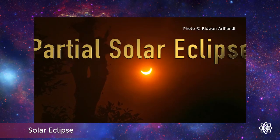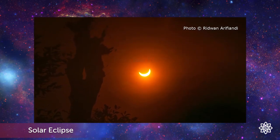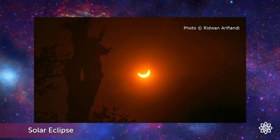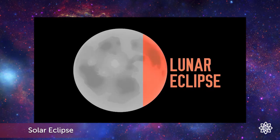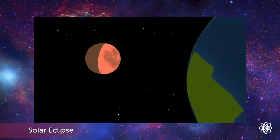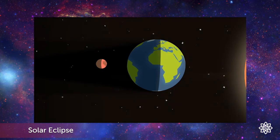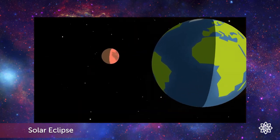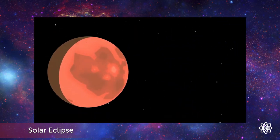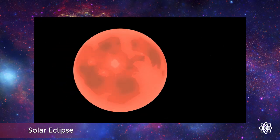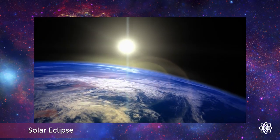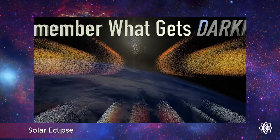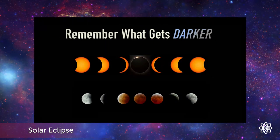A partial solar eclipse is more common, happening at least twice a year. A lunar eclipse, on the other hand, is where the moon moves behind the Earth, so it's the Earth blocking the Sun's light on the moon, creating a shadow on it with a red tint. The easy way to remember the difference is to remember what gets darker: with the solar eclipse, the Sun gets darker, and during a lunar eclipse, the moon does.